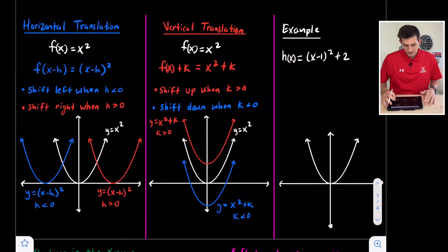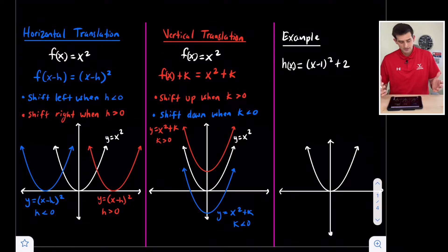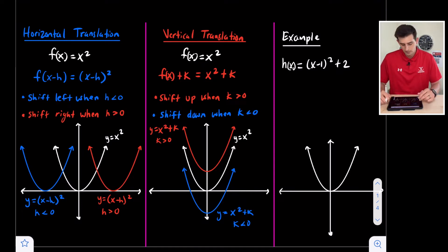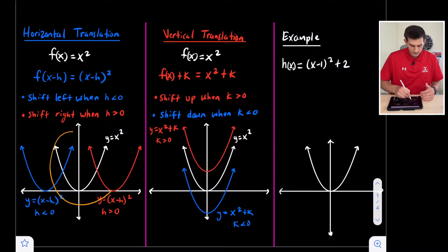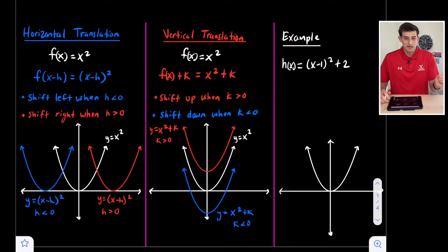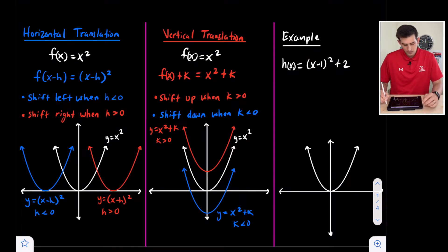Let's talk in more depth about each of these, starting with translations. On the left side we have a horizontal translation, in the middle a vertical translation, and on the right we'll combine those two in our example. Starting with f of x equals x squared as our parent function — graphed in white — what we're looking at is something being subtracted or added to x: x minus h, where the variable h represents our horizontal translation.